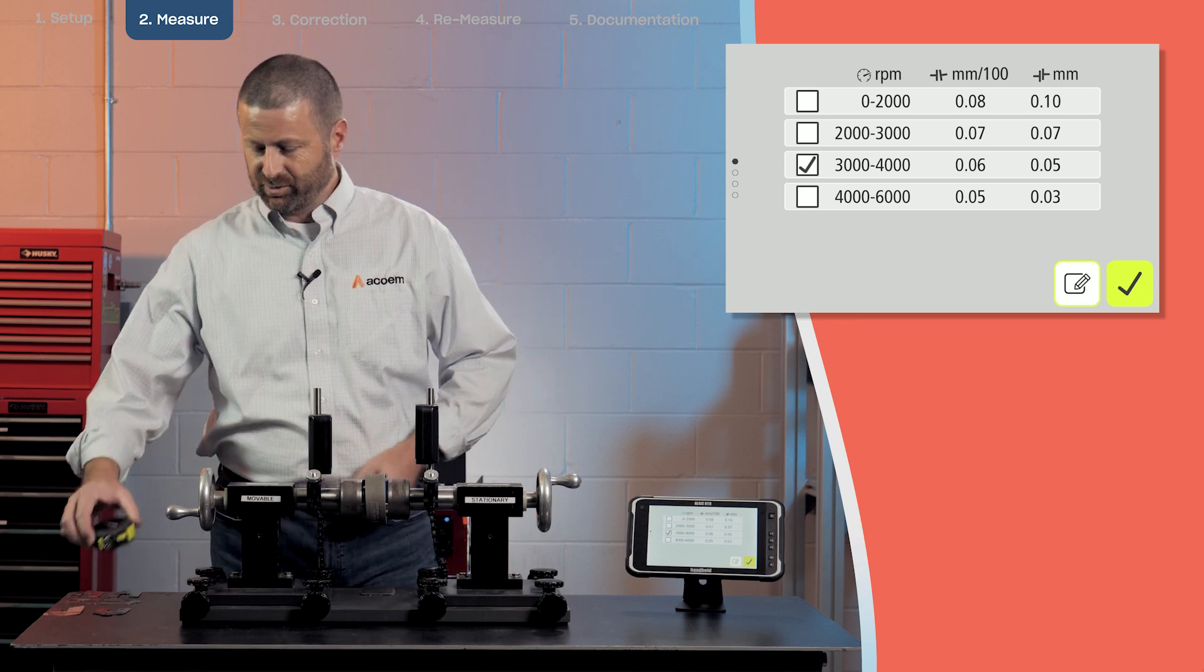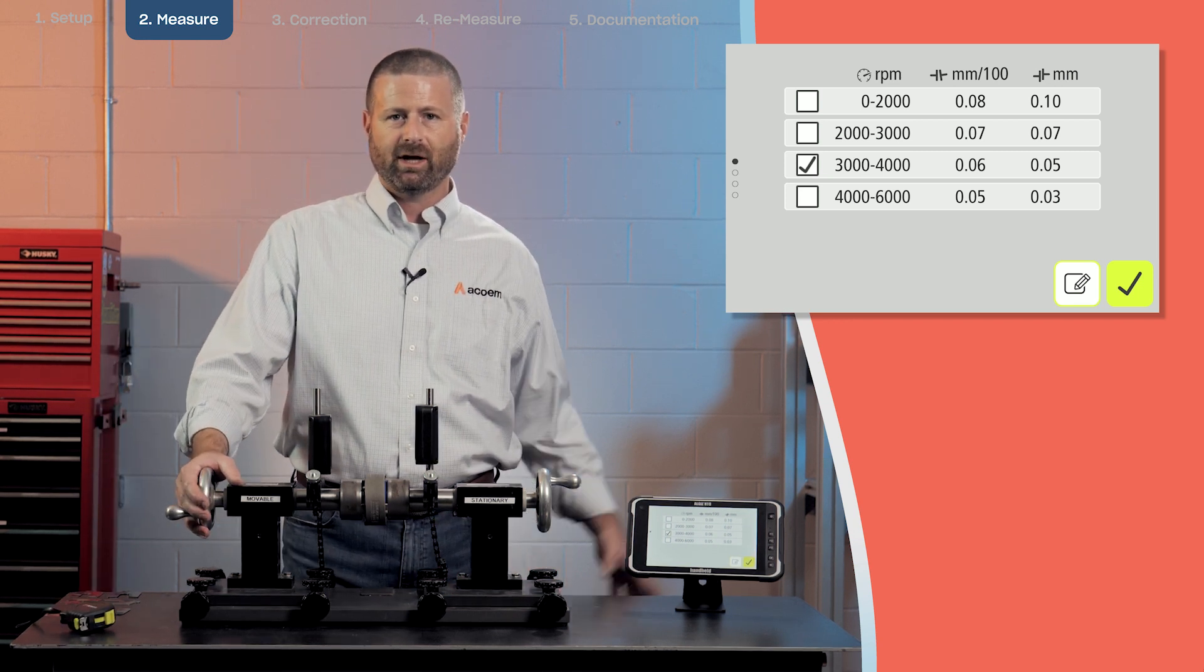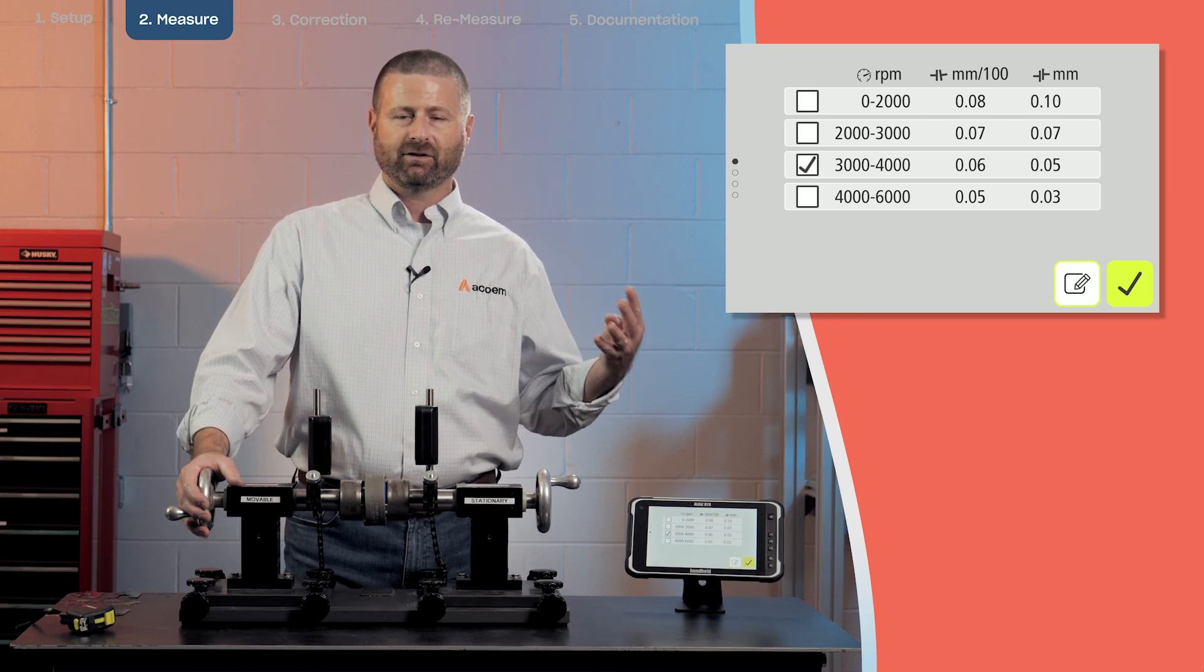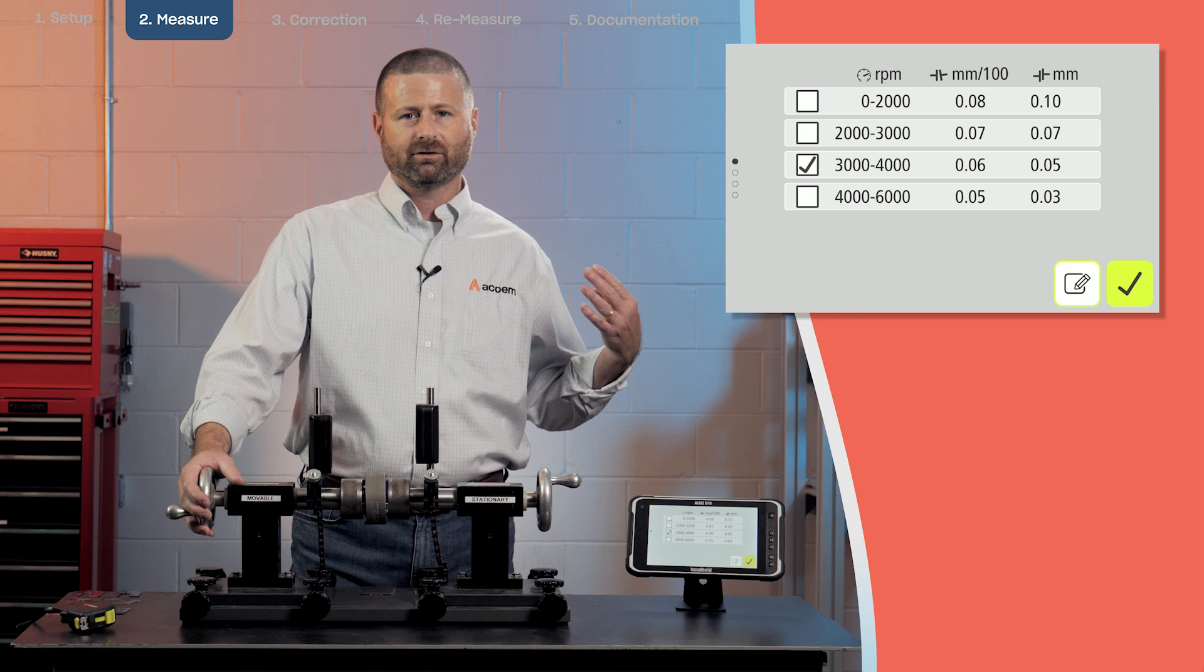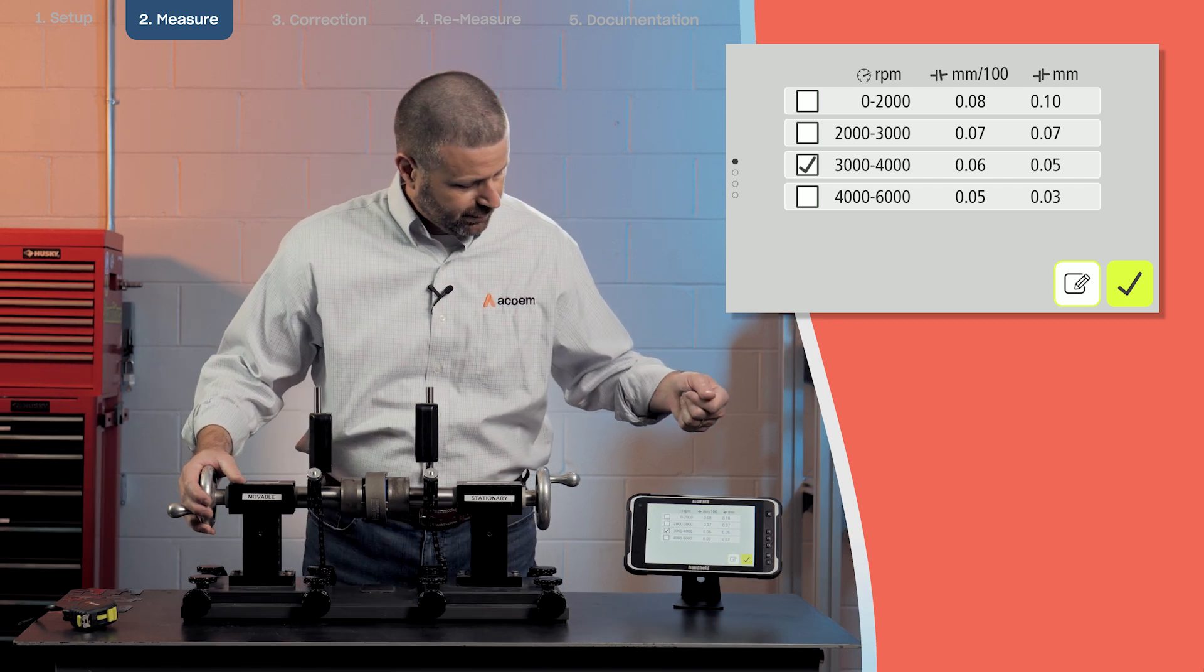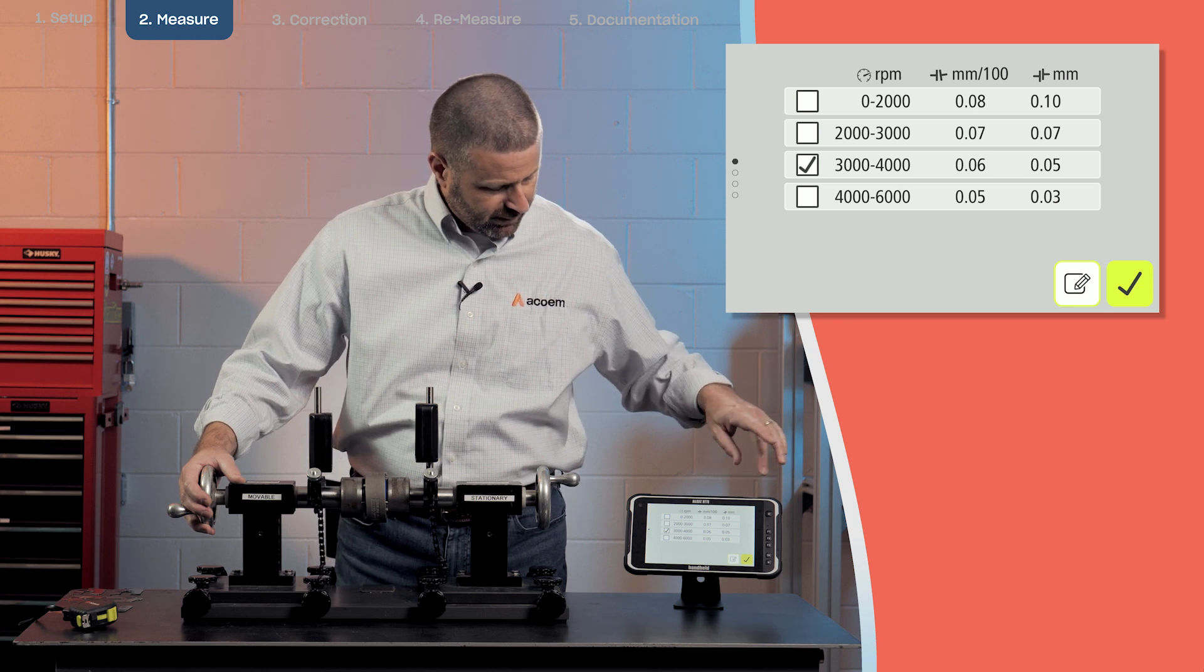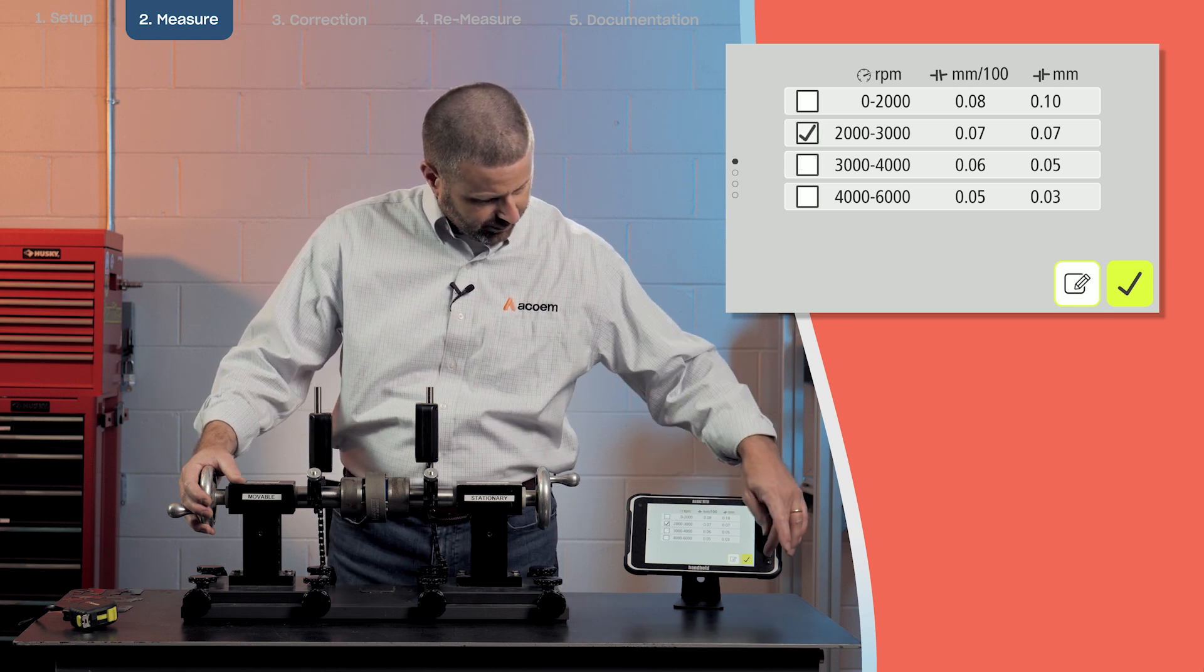At this stage we select a tolerance that's generally based off machine speed. We have four basic tolerances set in the instrument. But if you want to set your own tolerances, you can also add a user tolerance. Today we'll use the 2,000 to 3,000 RPM tolerance.